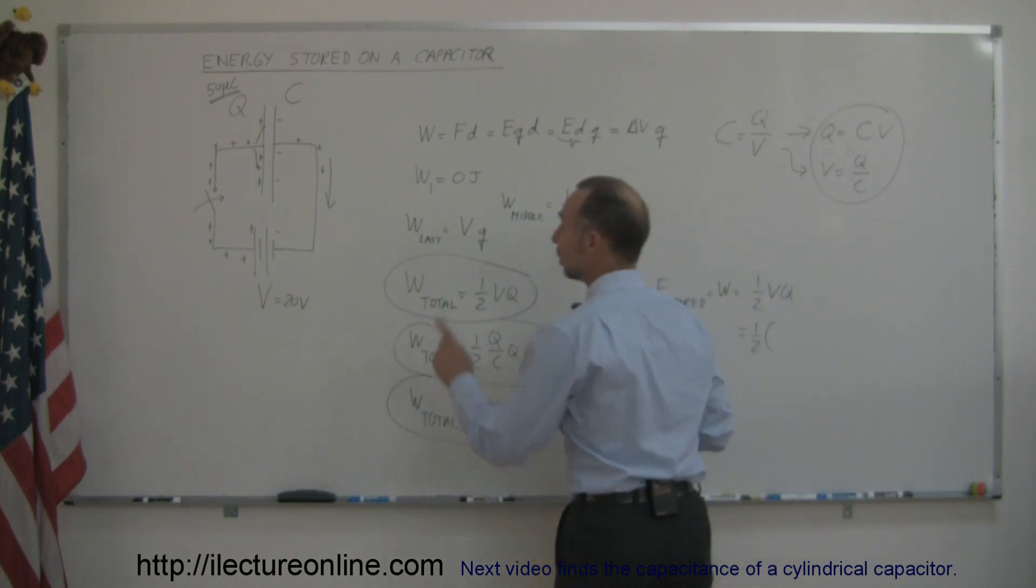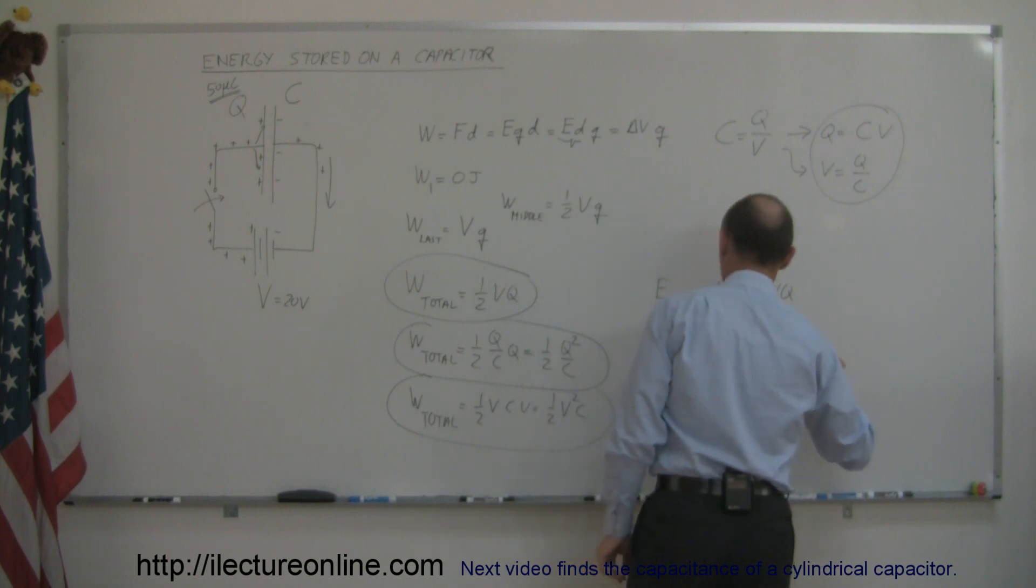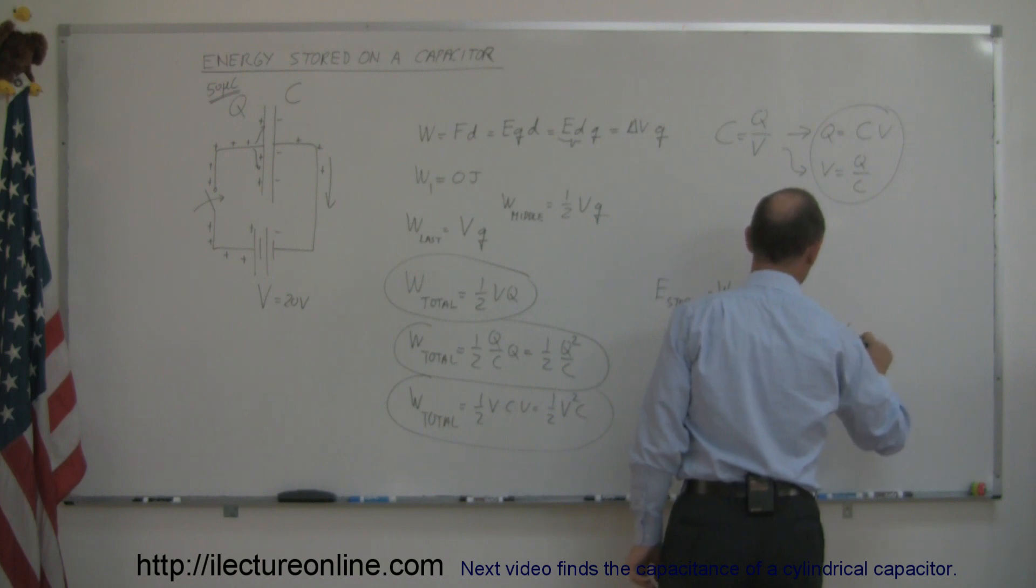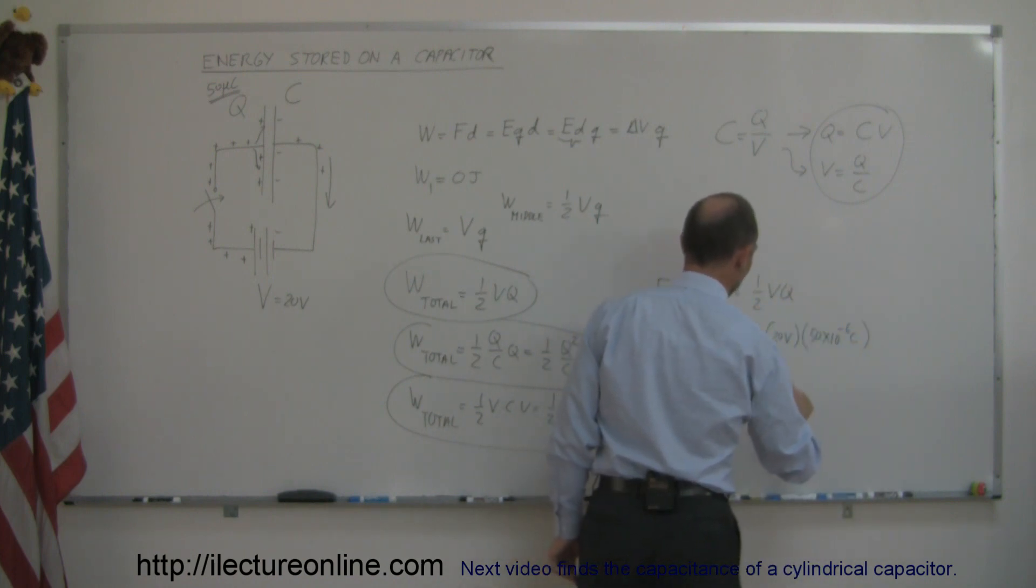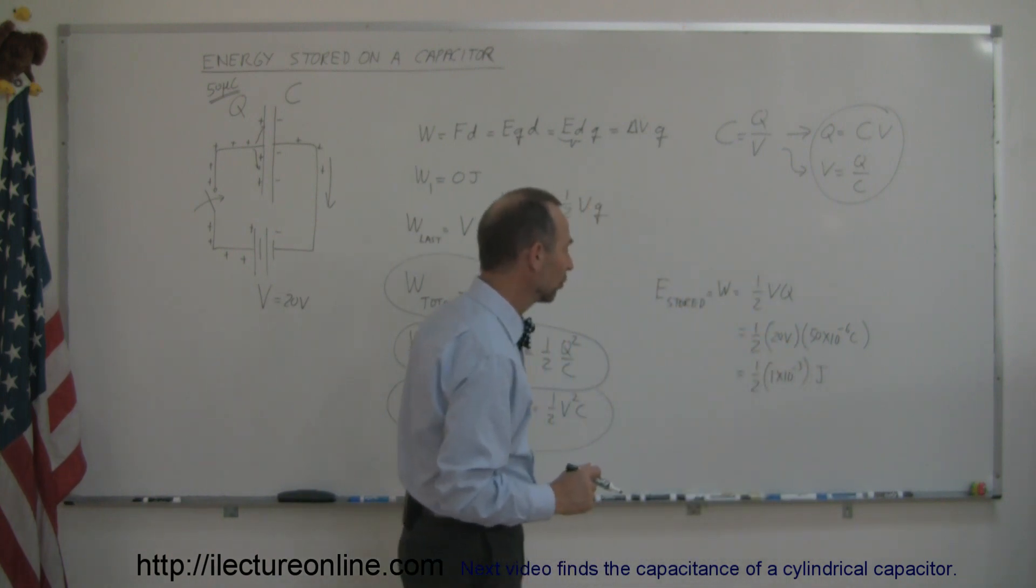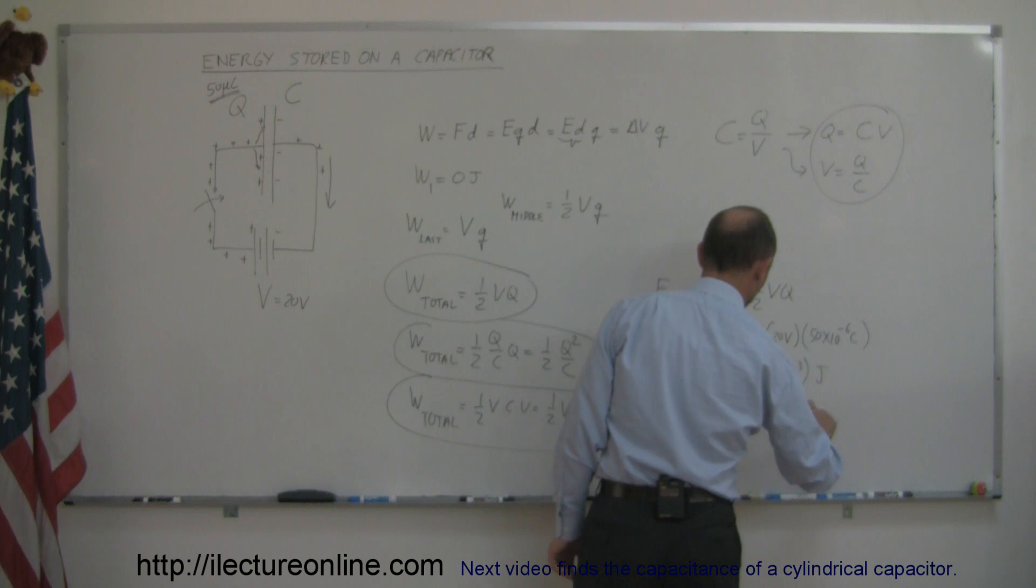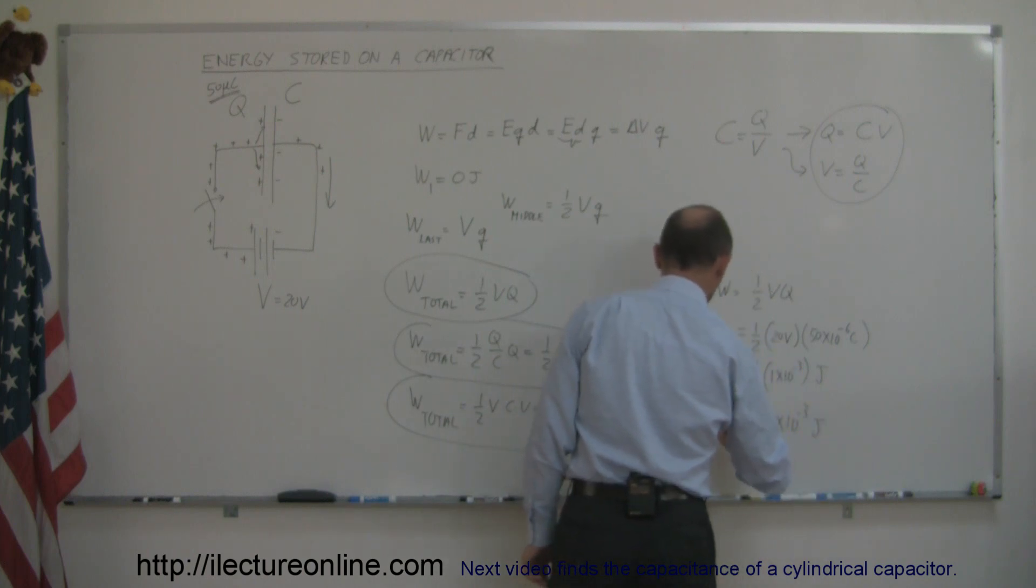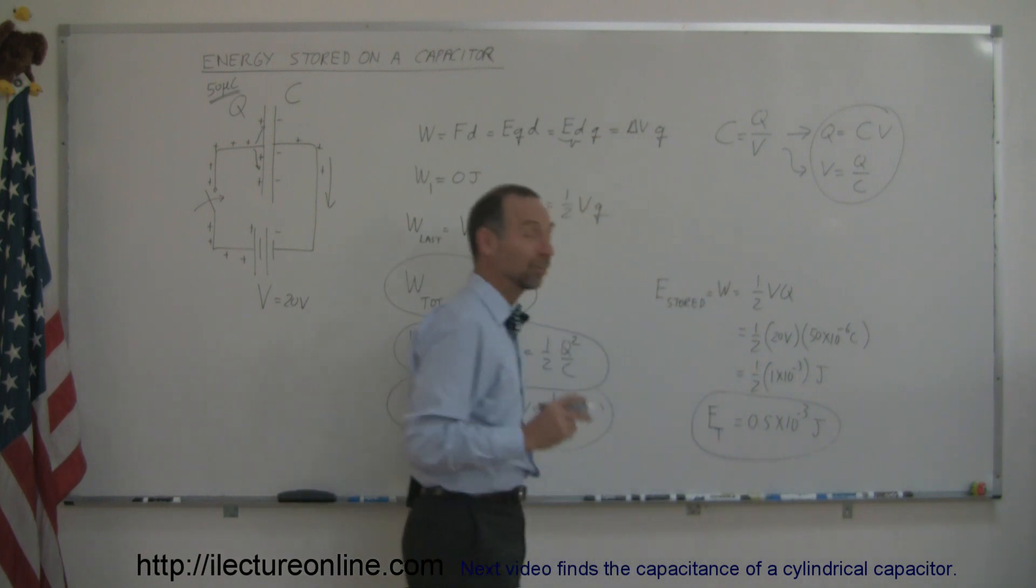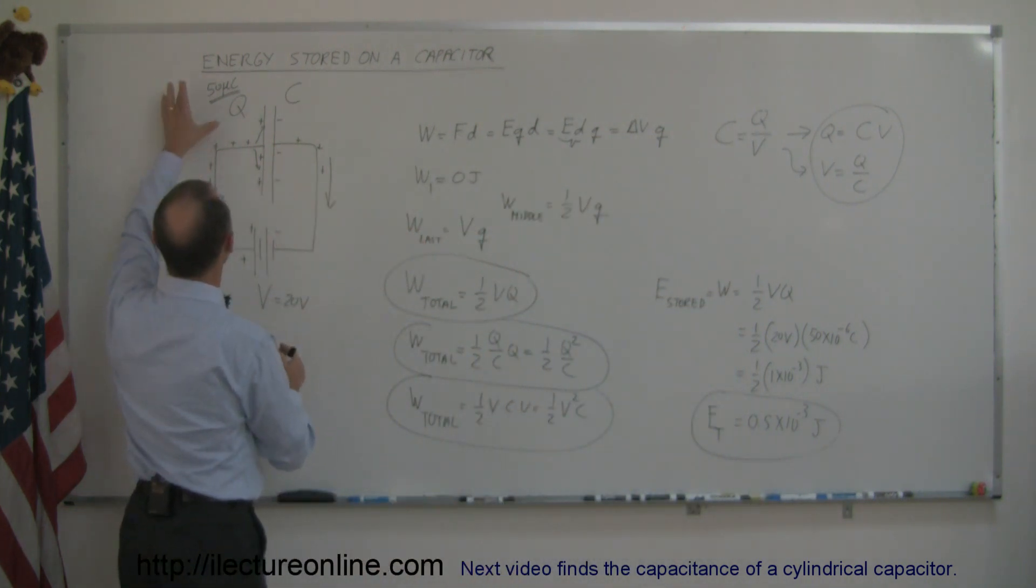the voltage is 20 volts, and the charge Q is 50 times 10 to the minus 6 coulombs, so that would be equal to one half times, 20 times 50 is 1000, times 10 to the minus 6, that would be 1 times 10 to the minus 3, and that would be joules, voltage times coulombs is joules, and one half that, that would be equal to 0.5 times 10 to the minus 3 joules. And that would be the total energy on the capacitor, this particular capacitor, if the potential difference is 20 volts, and the charge on the capacitor is 50 micro coulombs.